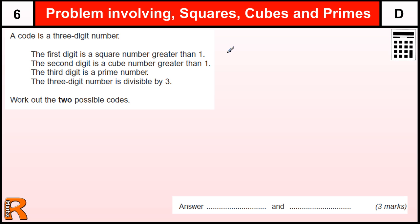So let's just write down the square numbers greater than 1. We've got 1 as a square number, 4, 9, 16, 25, and so on. But we only really need the single-digit ones, 4 and 9. So the first digit is either 4 or 9.